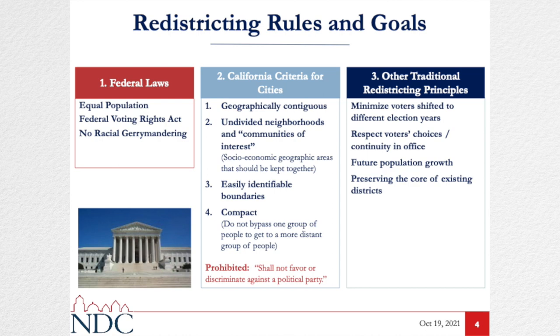We also need to consider the Federal Voting Rights Act. While race cannot be the only or even the predominant factor in creating a district, protected class communities — groups that have historically faced discrimination or barriers to registration and voting — have their rights protected under the Federal Voting Rights Act. We have to balance this as we look forward through the rest of the criteria.